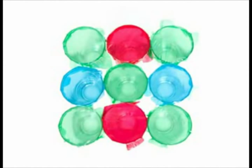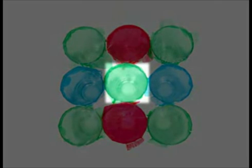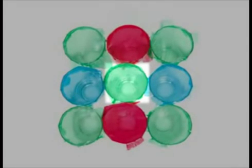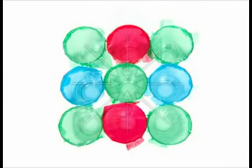For every pixel we see in a digital image, nine sensels are involved in the calculation: one central sensel, which is the position of the target pixel, as well as the surrounding eight sensels, which all contribute their information to the processor's calculation.